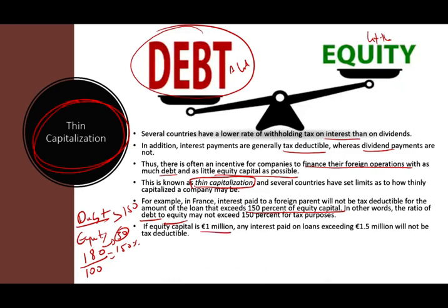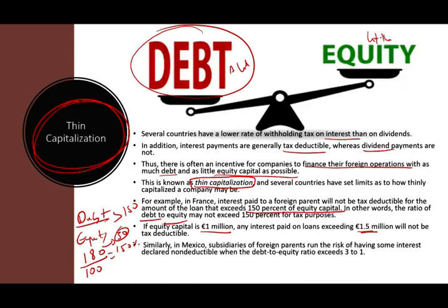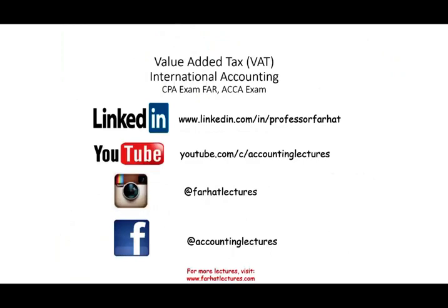If the equity capital is $1 million, you could have loan financing up to $1.5 million and still deduct the interest. You could have more than $1.5 million in loans, but anything above $1.5 million — the interest on that excess is not tax deductible. In Mexico, they are a little more liberal: you can go up to a 3:1 debt-to-equity ratio. If you have $100 million in equity, you can have $300 million in debt and still be fine. So Mexico allows companies to be more thinly capitalized than France.